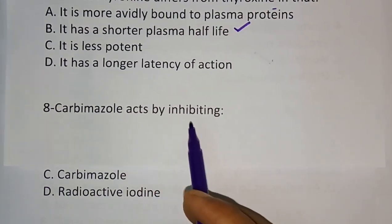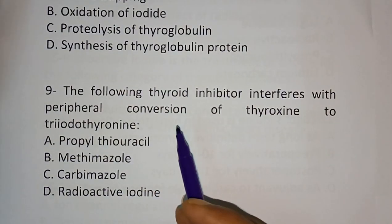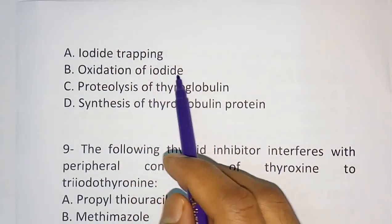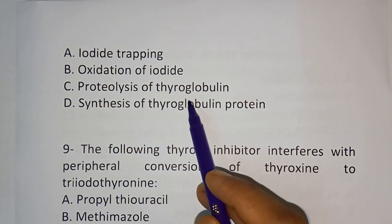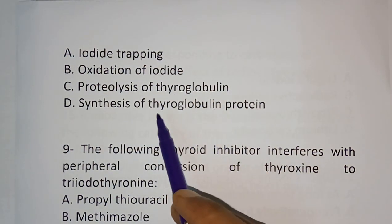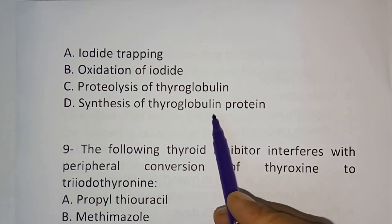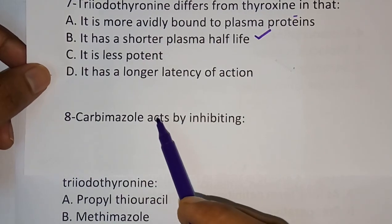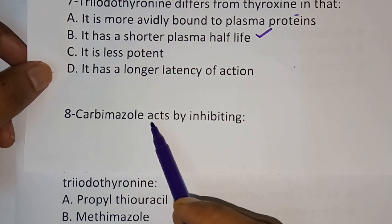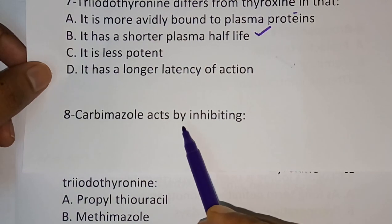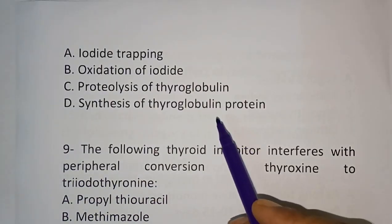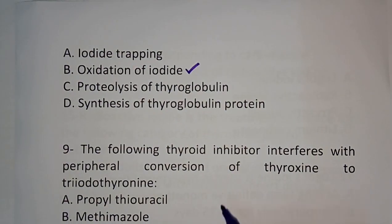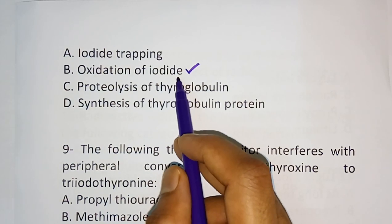Question number eight: Carbimazole acts by inhibiting — options are iodide trapping, oxidation of iodide, proteolysis of thyroglobulin, or synthesis of thyroglobulin protein. Carbimazole is an antithyroid drug — carbimazole, methimazole, all are antithyroid drugs. The mechanism of action is option B, oxidation of iodide. Carbimazole inhibits oxidation of iodide.